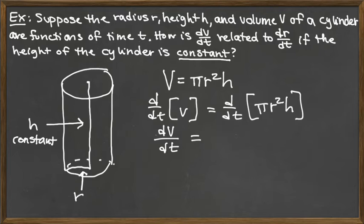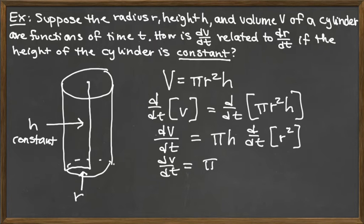Now π is always a constant, but depending on the setup of a particular word problem, r and or h may be varying. For this particular one, we are saying that h is constant. So really what we're looking at here is the constant multiple π times h, and then we need the derivative with respect to t of r².